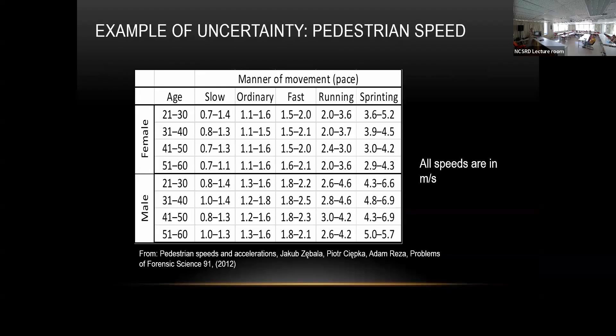Some examples of parameters are the typical speed at which people move, which can vary a lot. We can vary this and look at all possible reasonable values at which people can move.